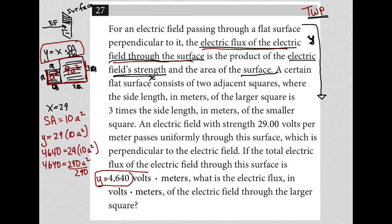I can divide both sides by 290. And in my calculator, 4640 divided by 290 is 16. So I get 16 equals A squared. And I can square root both sides and get A equals 4.